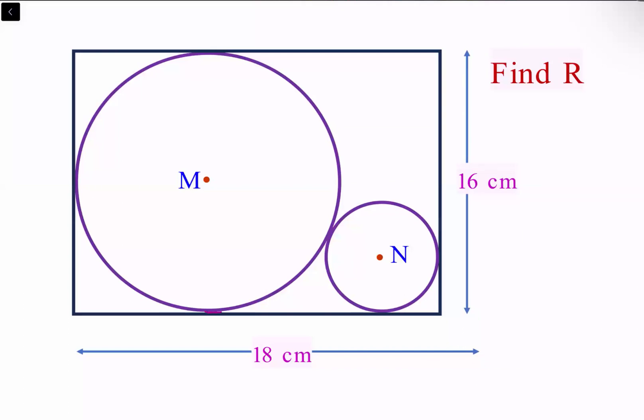We're only interested in the smaller circle because the bigger circle we can easily determine. The bigger circle has a diameter equal to the full length of 16 centimeters, so the radius of the bigger circle is 8 centimeters. We need to find the radius of the smaller circle.